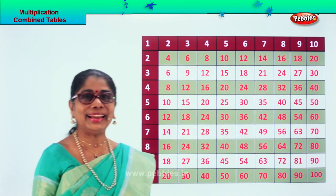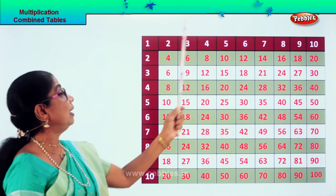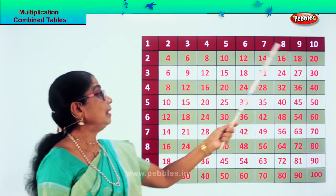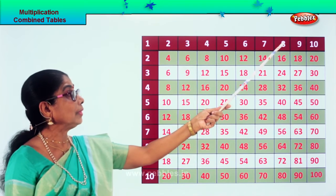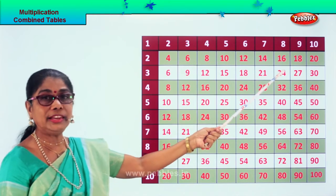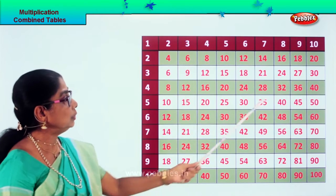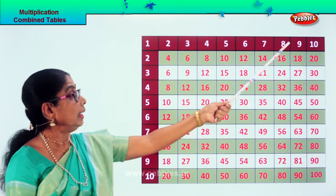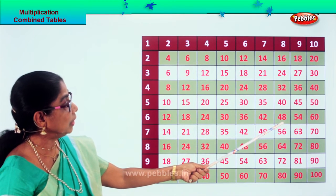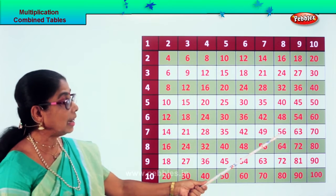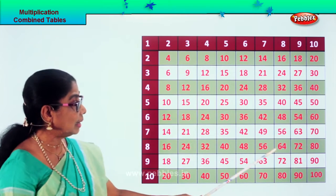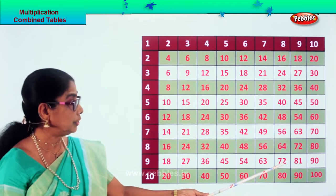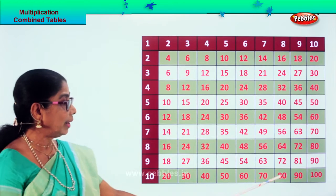Are you enjoying? Good! Now let's look at eight. Eight ones are eight, eight twos are sixteen, eight threes are twenty-four, eight fours are thirty-two, eight fives are forty, eight sixes are forty-eight, eight sevens are fifty-six, eight eights are sixty-four, eight nines are seventy-two, eight tens are eighty.